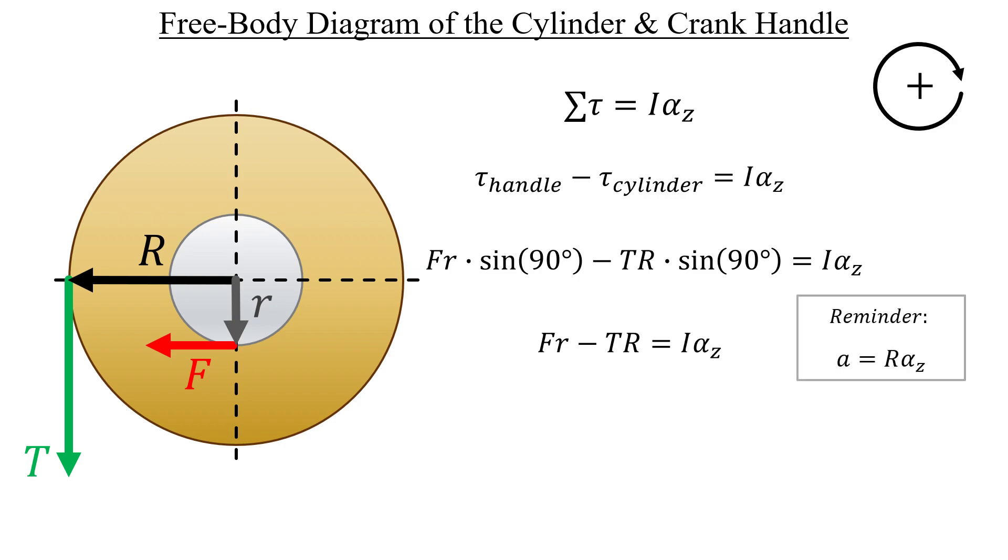And if we take that and divide both sides by capital R, then we have a ratio that we can substitute for alpha. And now the only unknown variable is F, which we can solve for algebraically.